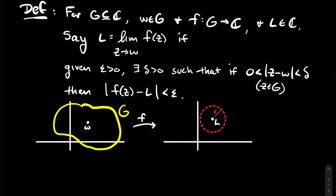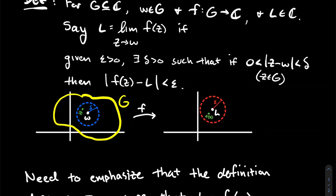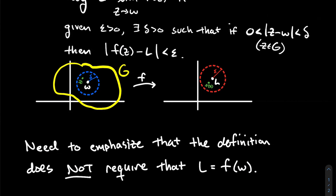I've got my domain G on the left, I plug points into F, and it spits out numbers on the right. L is just some complex number — I'm not necessarily saying L is an output of F. This definition says I should be able to put any disk around L of whatever radius epsilon, and then go back and find some disk to put around W of radius delta. The blue window depends on how big the red window was.